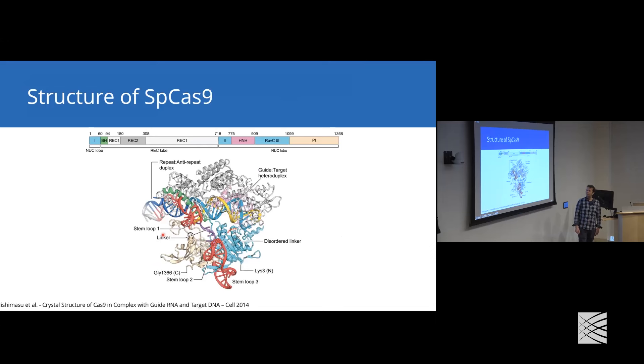If you look at the domain architecture of S. pyogenes Cas9, it's a huge protein of 1,368 amino acids. It has two major domains, one called the REC lobe and one called the NUC lobe. In the NUC lobe, we have two domains called RuvC and HNH, which are the endonuclease active domains. In the crystal structure, you can see that the single guide RNA is loaded into the protein and forms part of this protein complex. In yellow, you can see the target strand being bound by the guide RNA.